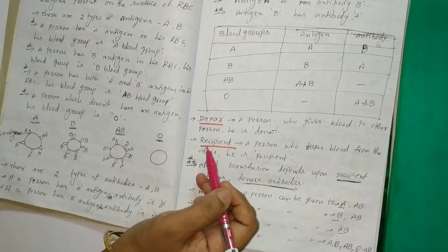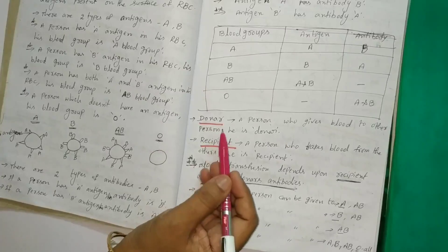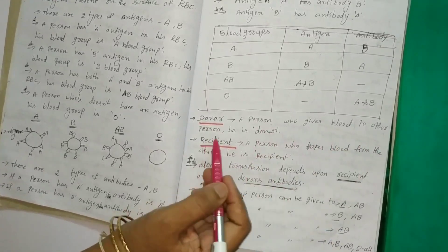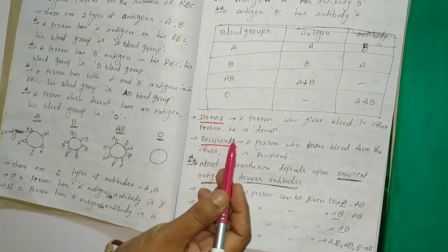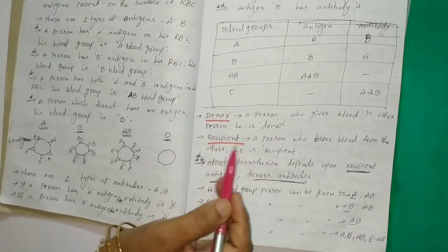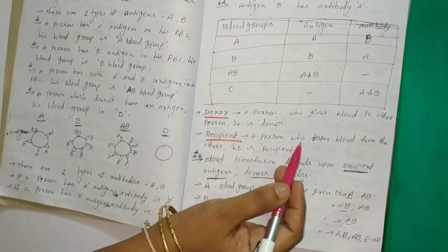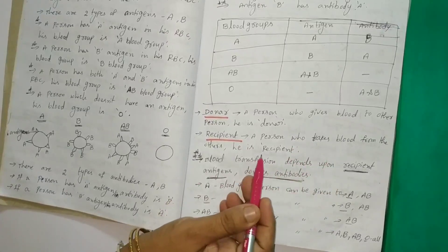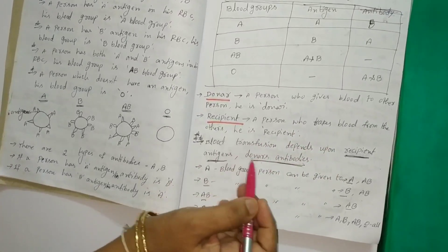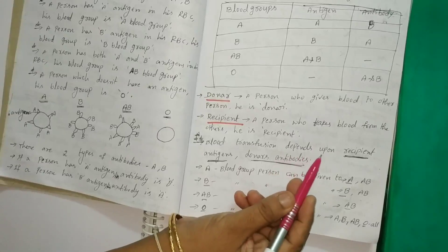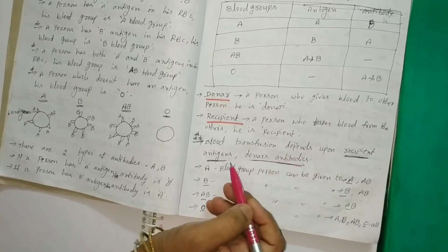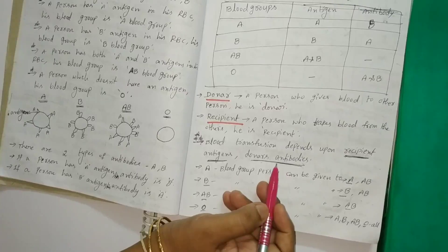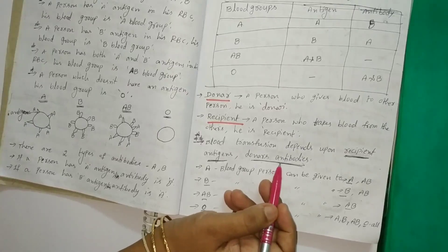Donor and recipient. A donor is a person who gives blood to another person. A recipient is a person who takes blood from others. Blood transfusion depends upon the recipient's antigens and the donor's antibodies. This is a very important point.